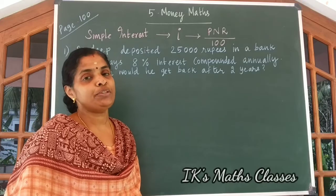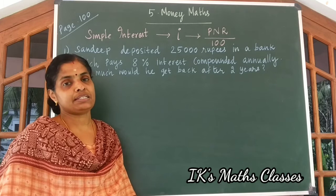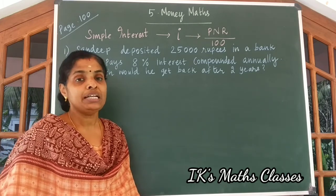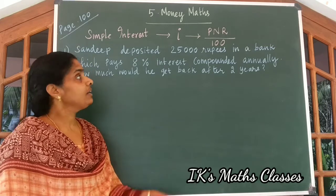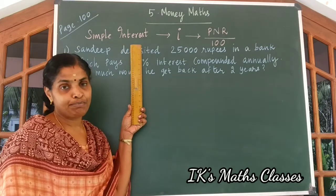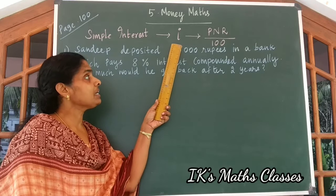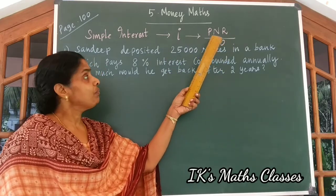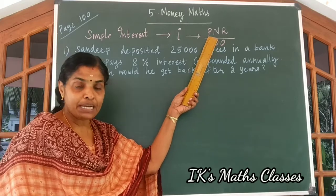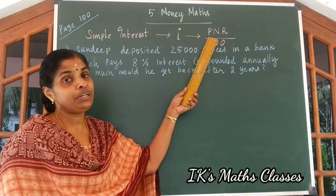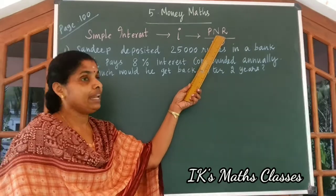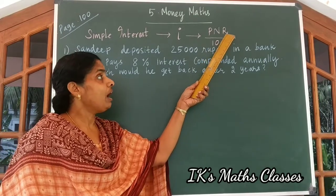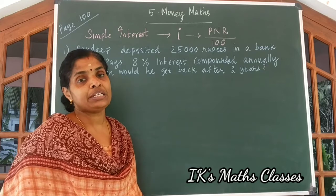Hi kids, welcome to the next chapter: Money Maths. In previous classes you have studied about simple interest. We know the formula for simple interest as I is equal to PNR by 100, where P denotes principal, that is the amount deposited, N stands for number of years, and R stands for rate of interest.